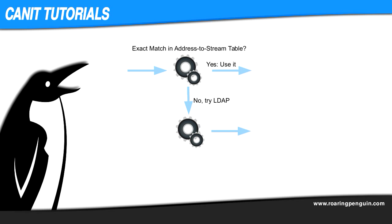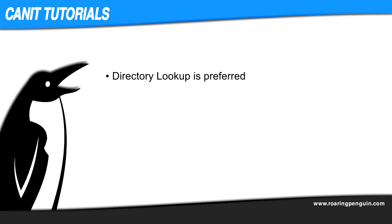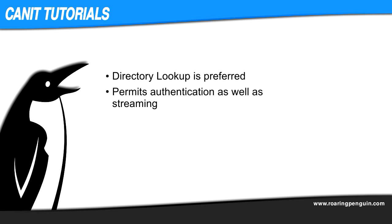Canet has built-in settings for Active Directory and default options that work well for many other LDAP systems. In most cases, a directory like Active Directory or LDAP is the way to go. Not only does the directory provide alias information, it also means users can log in with their existing usernames and passwords. For details about setting up LDAP, please see our companion video, Integrating Canet with Active Directory/LDAP.